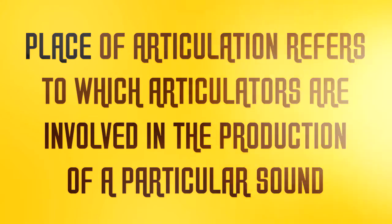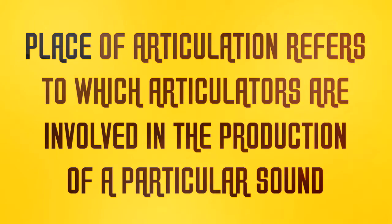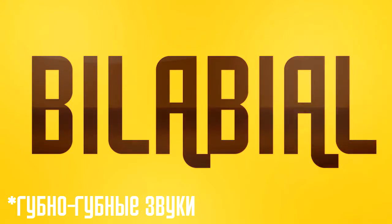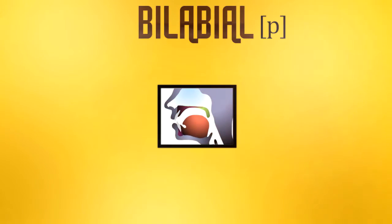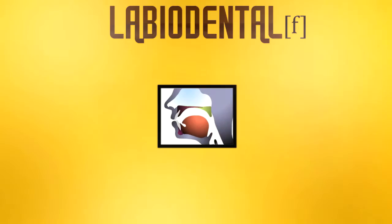An obstruction is naturally formed when two articulators come close together — generally one is moving and the other is stationary. As a result, what is normally termed the place of articulation is actually a combination of a place of active articulation and a place of passive articulation. The places of articulation used in English are: bilabial, where both lips come together, as in P, B, or M; and labiodental, where the lower lip contacts the upper teeth, as in F or V.